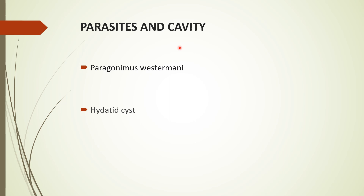These are all the causes of cavitary lung diseases, and treatment varies according to the cause and etiology. To summarize using 'PP CAVITY': under pneumonias — tuberculous, bacterial, fungal, and parasitic. Under bacterial: all gram-negatives. Under fungal: all fungal pneumonias. Under parasitic: Paragonimus westermani and hydatid cyst. Thank you.